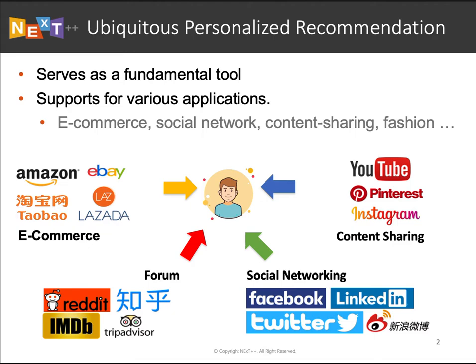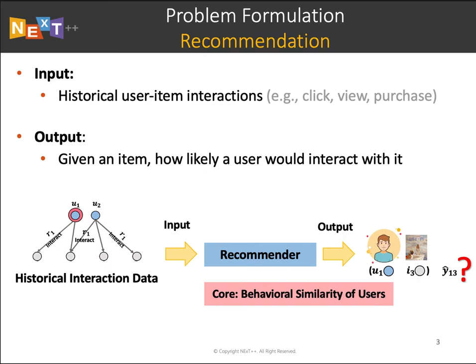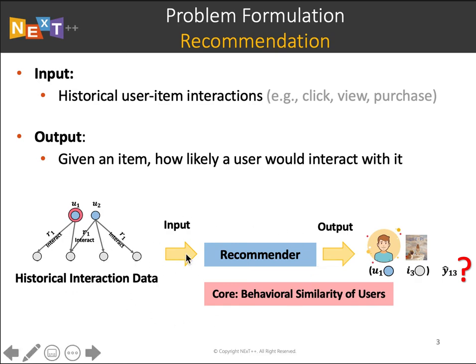Personalized recommendation has been a fundamental tool in many user-oriented applications, like e-commerce, social networking, and content-sharing platforms. It is important to formulate the task of recommendation. Typically, given historical user-item interactions like clicks, views, and ratings, we design a recommender model that can predict how likely a user would adopt some target items. The core is to discover the behavioral similarity of users from such historical interactions.